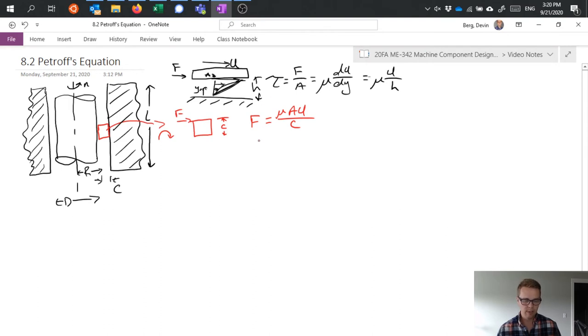My A in this case then is equal to 2πRL because what I have here is I have a radius, so I have a circumference times a length to give me a whole area.